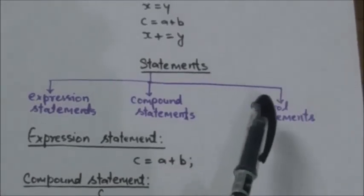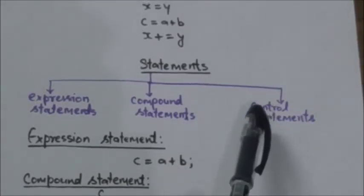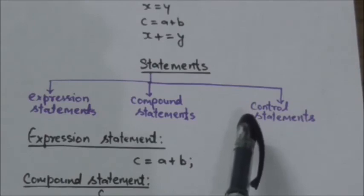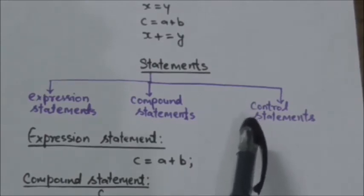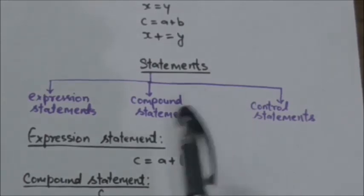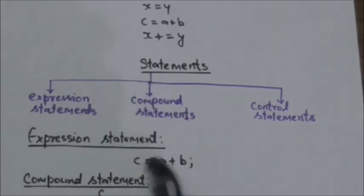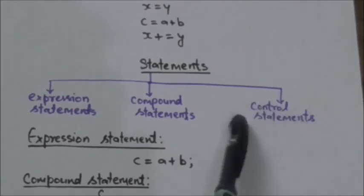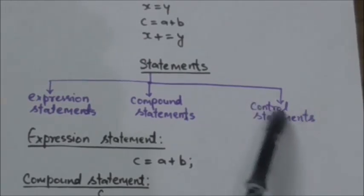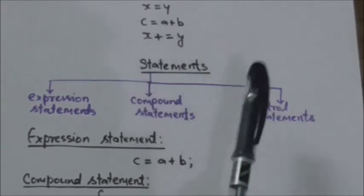Another type of statements in C programming language is control statements. So the control statements are used to create special program features such as logical tests, loops, and branches. So about control statements, we will study about them in detail in another tutorials.